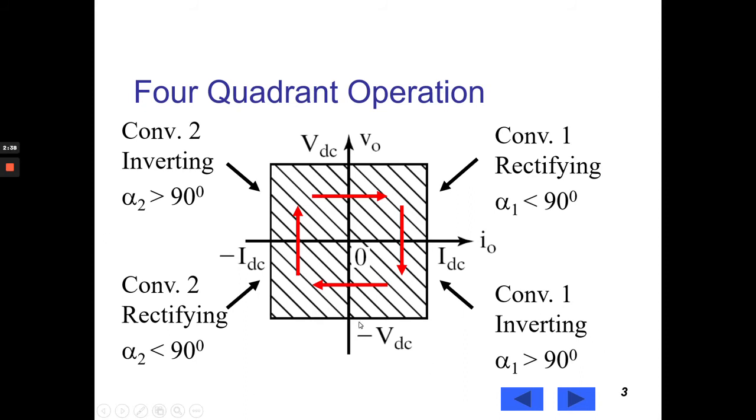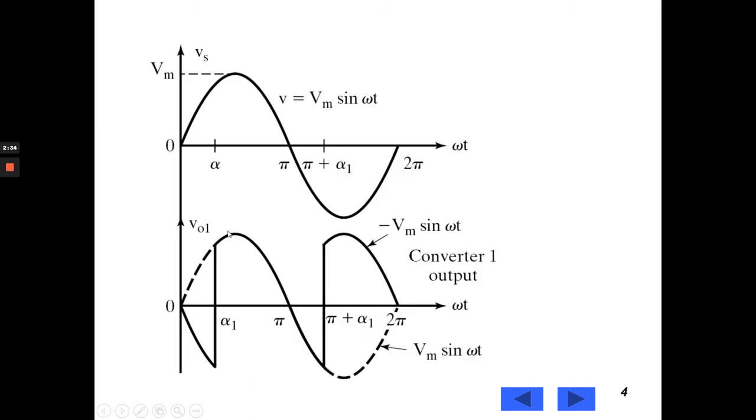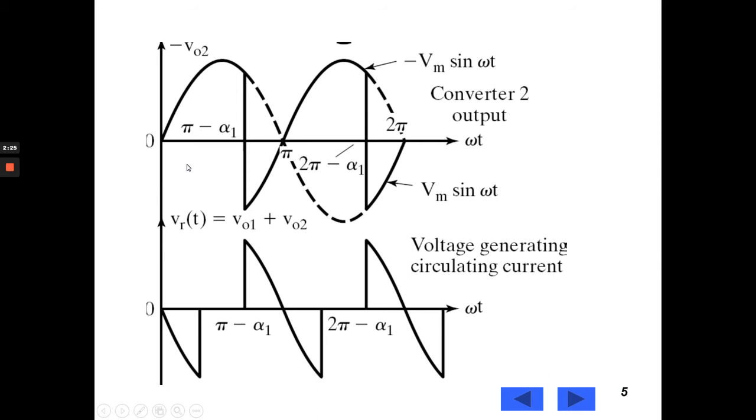This is the four quadrant operation of dual converter. These are the waveforms of output voltage. Input voltage waveform. This is converter 1 output. This is converter 2 output and this is VR, that is VO1 plus VO2.